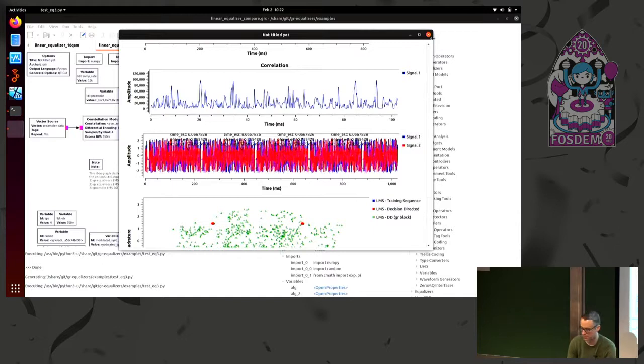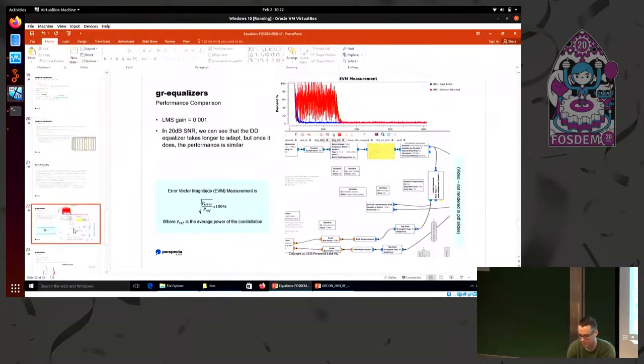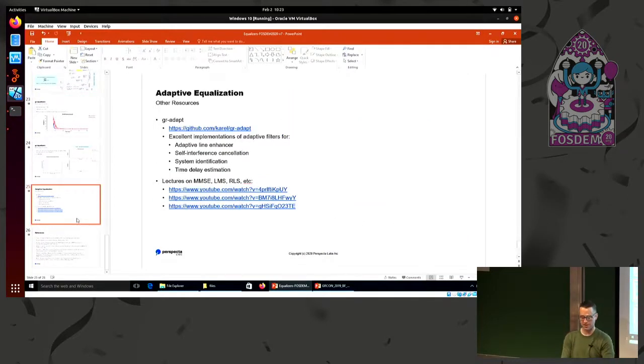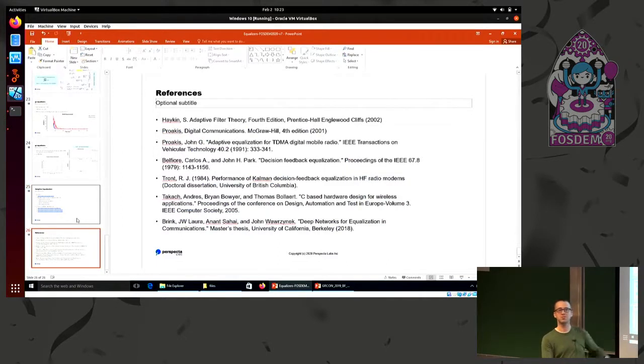I think I'm starting to run out of time here. Just do a quick, other resources. There is another out of tree module, GR Adapt, that someone, I don't know this person, I don't know if Karel is here, but this was an excellent implementation of other applications of adaptive algorithms. So this is worth taking a look at. And then there is some actually very good YouTube videos, university lectures on MMSE, LMS, RLS, all the derivations. So highly recommend those. They do a much better job than me. And then books and papers and things. All right. So questions. Anybody?